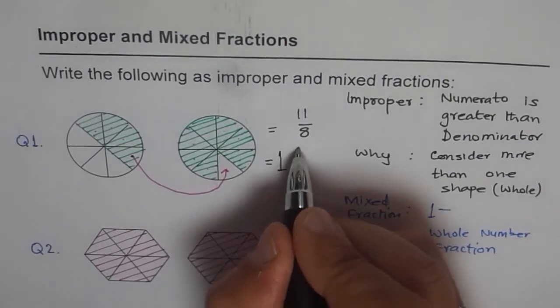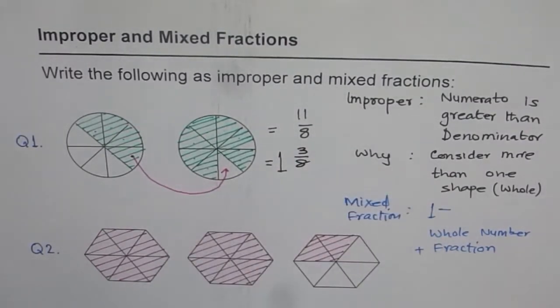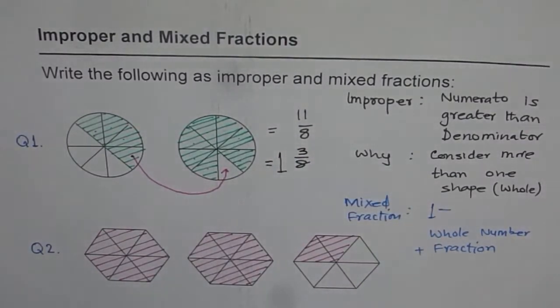And if I remove from here and put it there, how many 8ths do I have? 1, 2, 3. So we get 3 out of 8 here. So that is how we can write the same figure or illustration as a mixed number and as improper fraction.